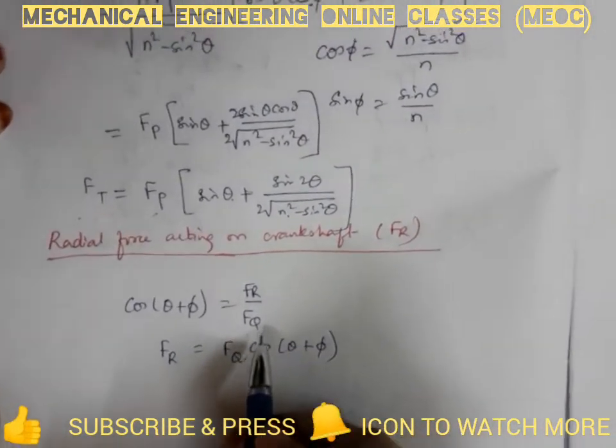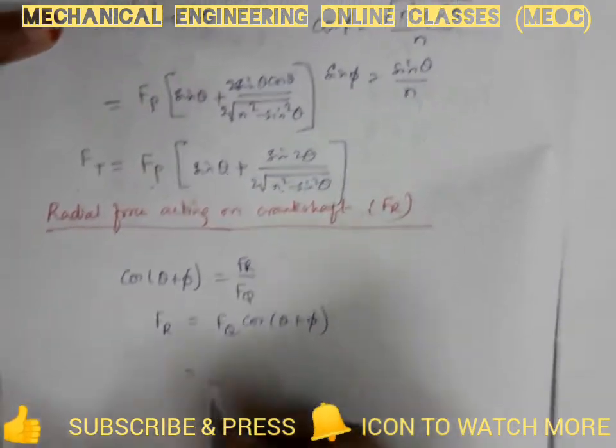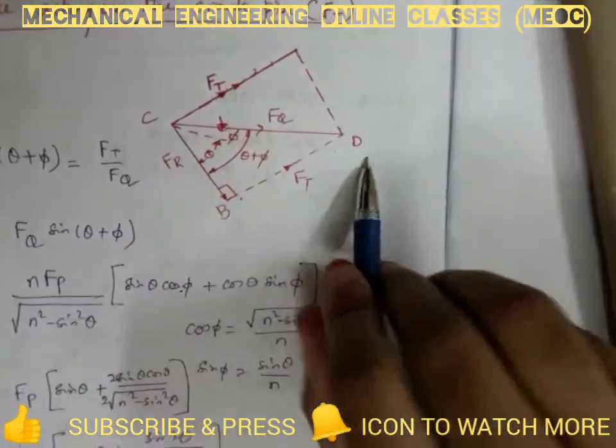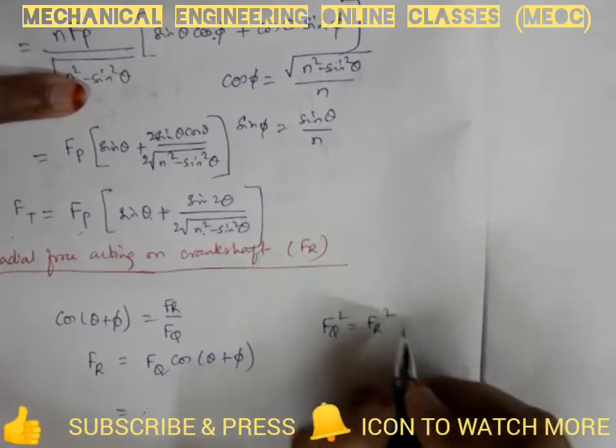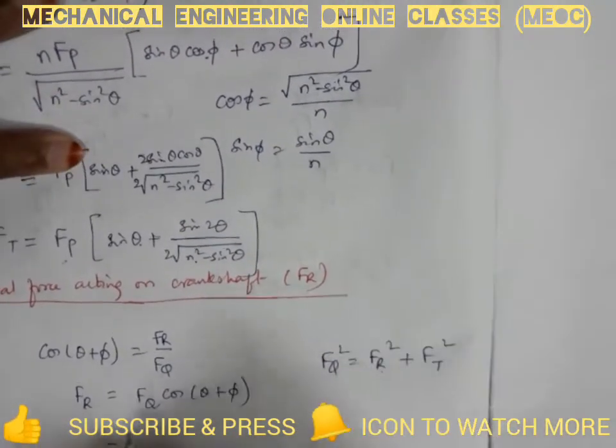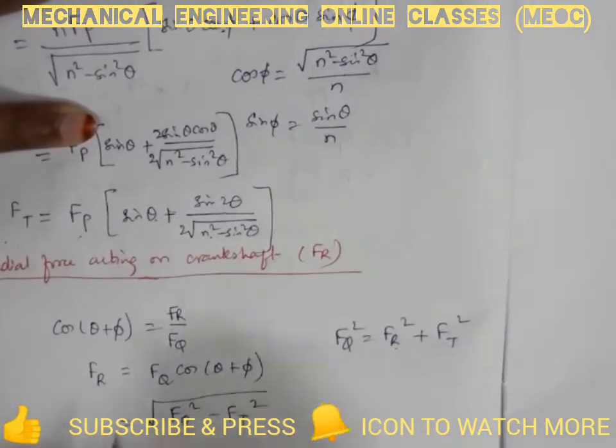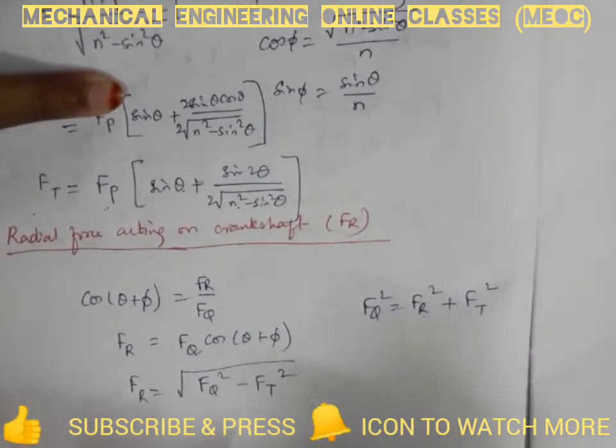Fq we have already found in terms of Fp and also we know that from this figure Fq square is equal to Fr square plus Ft square. So therefore since Fq square equals Fr square plus Ft square we know Fr is root over Fq square minus Ft square. So these are the two relations to find Fr which is the radial force acting on the crankshaft.